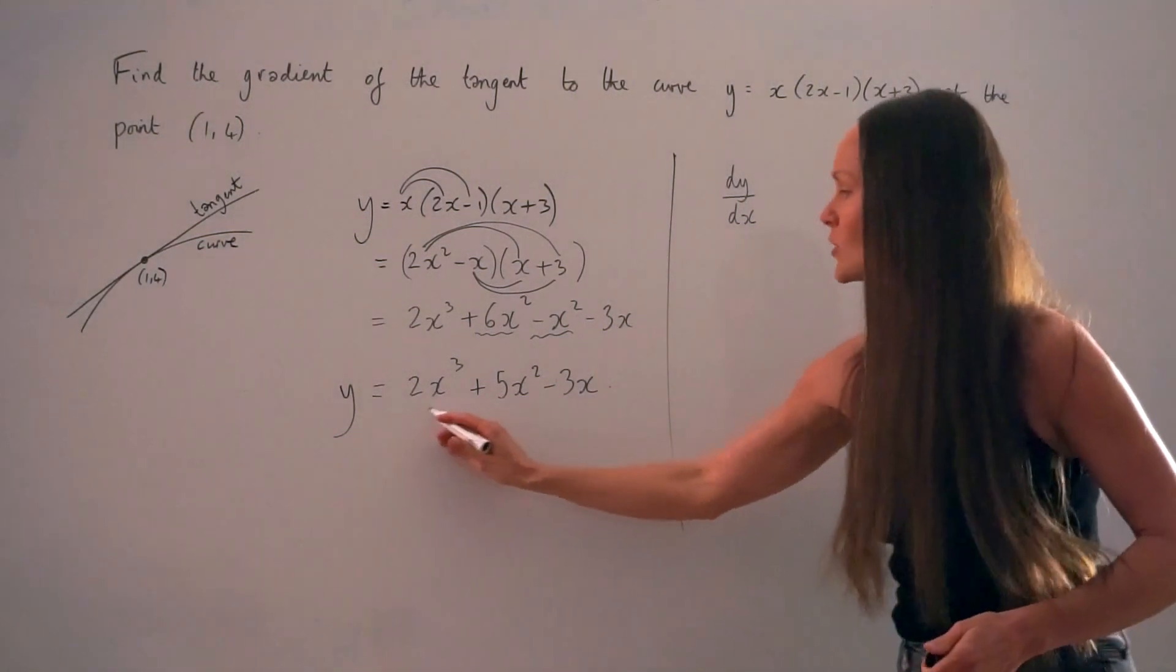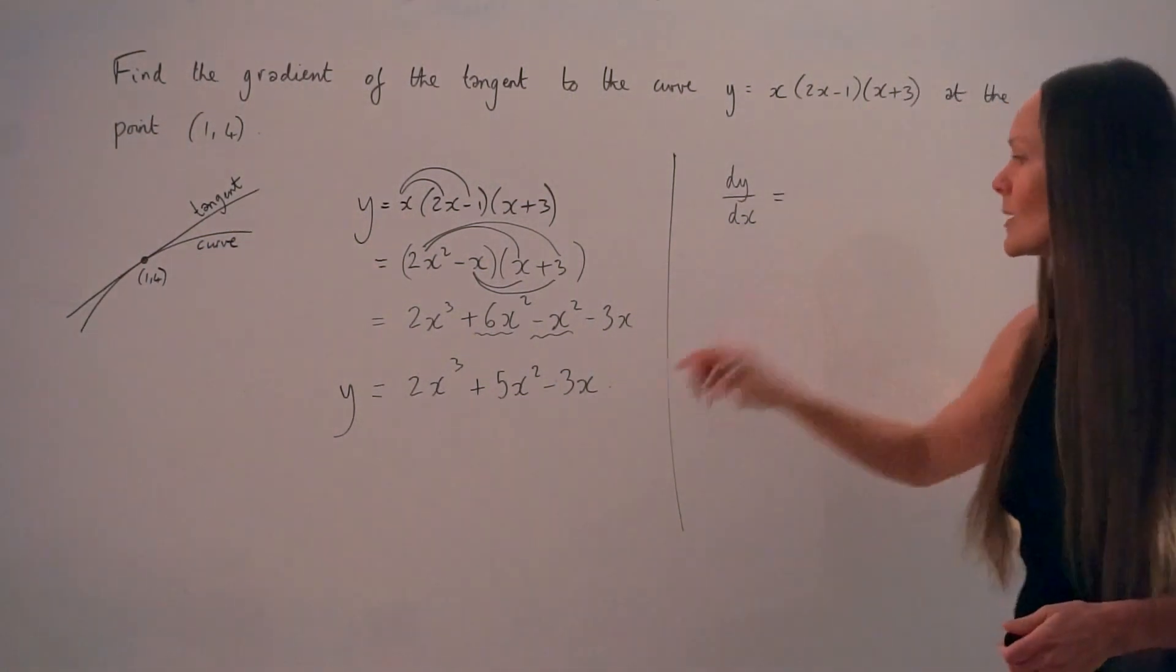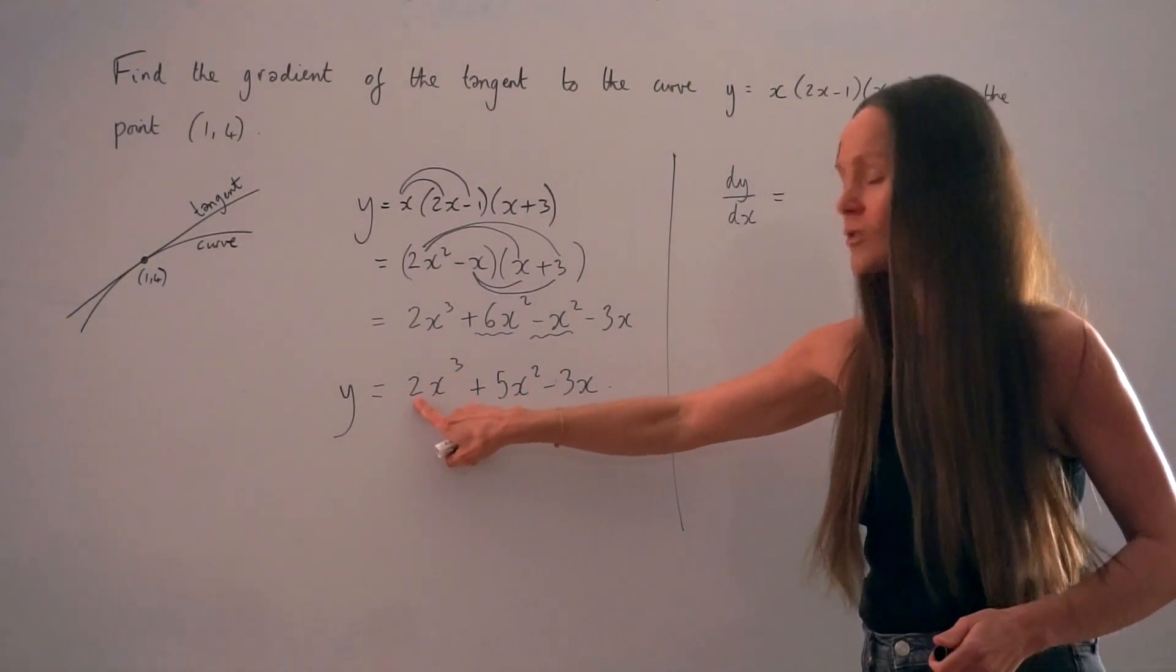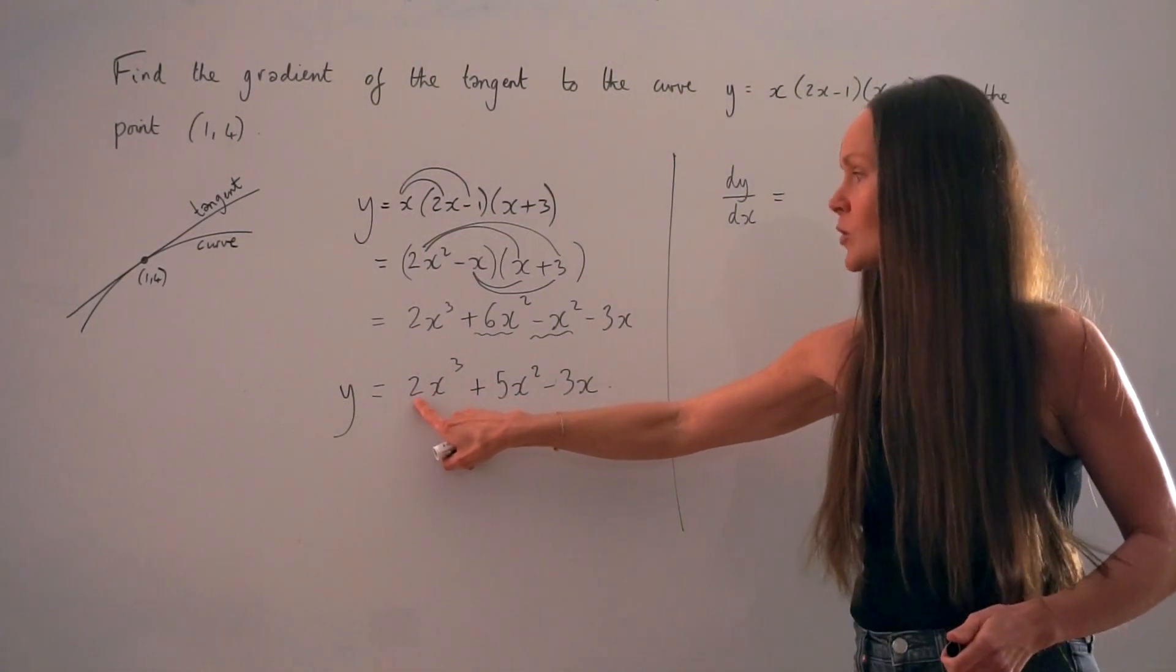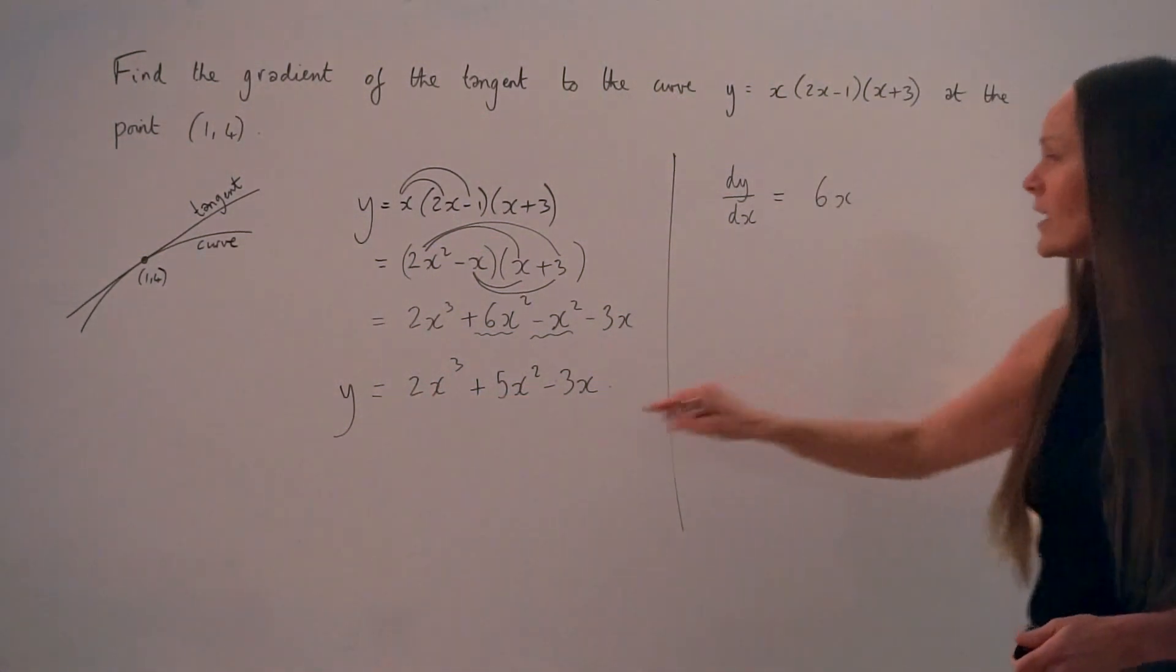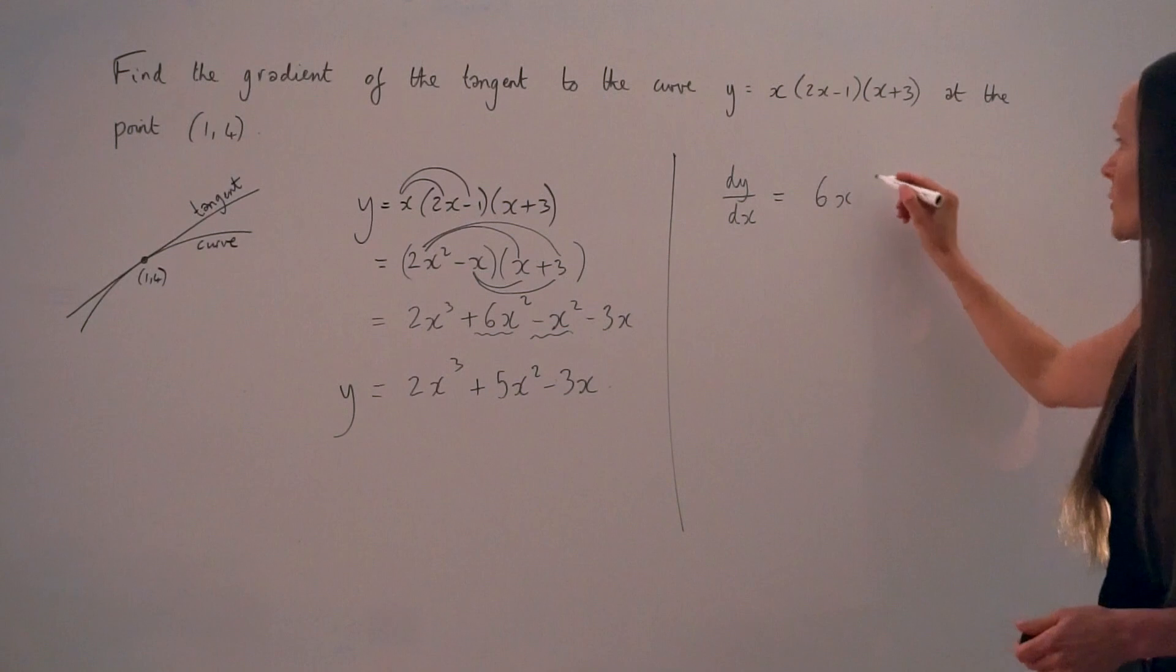So if I'm going to differentiate, what I have to do is take the power here on the x, so positive 3, and multiply it with the coefficient positive 2. So 3 multiplied by 2 is 6. Then this power decreases by 1, so I have x squared.